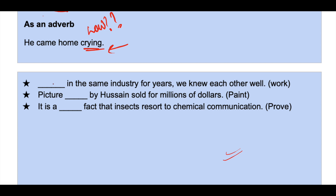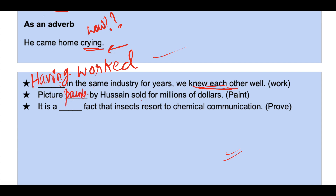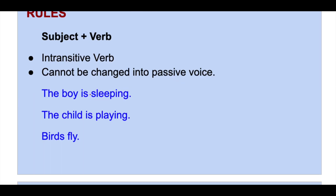Now let's solve these questions. Blank is blank in the same industry for years — we knew each other well. The answer is 'having worked,' because that action was completed and as a result we knew each other well. 'Picture blank by Hussain sold for millions of dollars' — answer: painted. 'It is a blank fact that insects resort to chemical communication' — it is a proven fact, so 'proven' is the adjective.